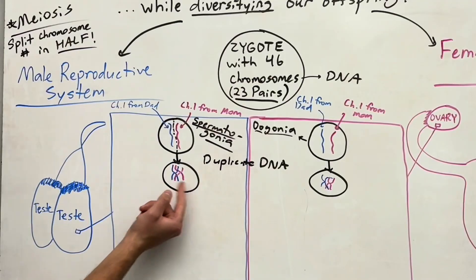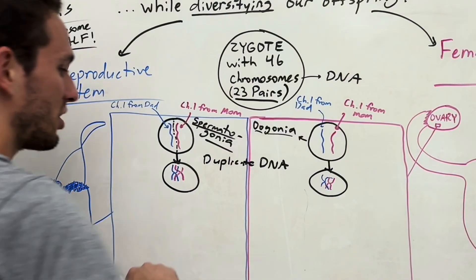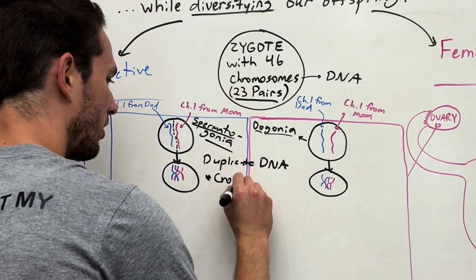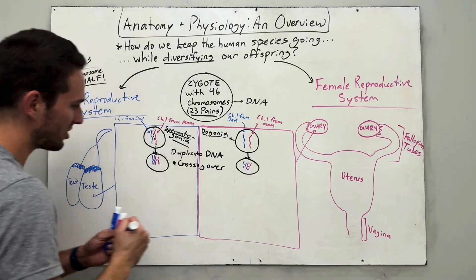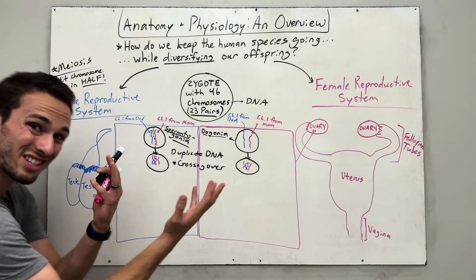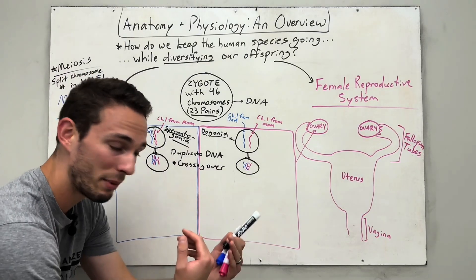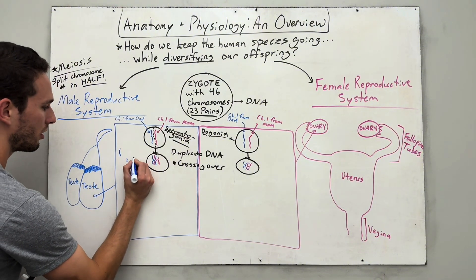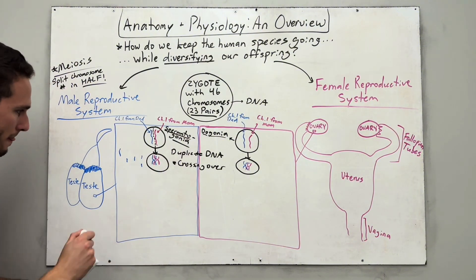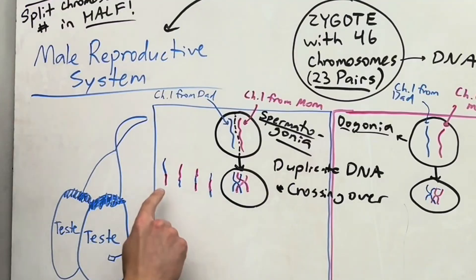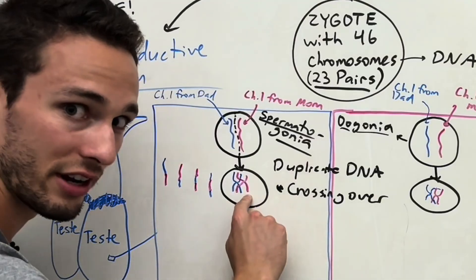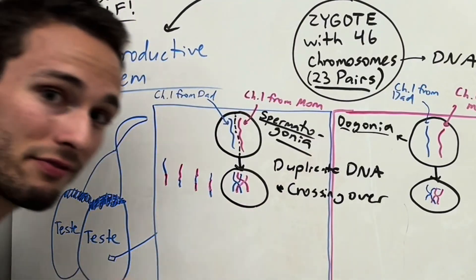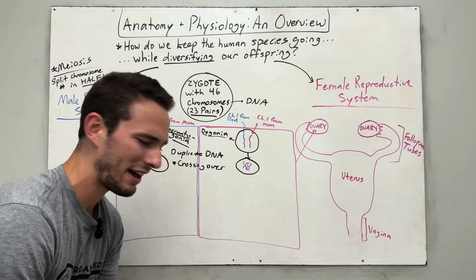So what we do is duplicate it. At this point, there's an amazing process called crossing over that occurs. That's basically where these chromosomes are going to swap DNA amongst each other, so each chromosome may look blended now. Now each of the four chromosome ones in here all have a blend of both mother and father's DNA.